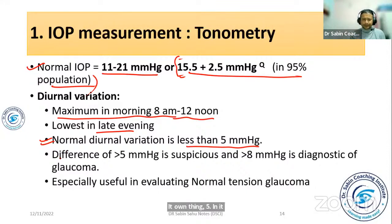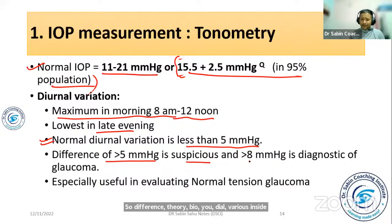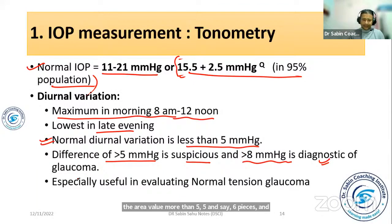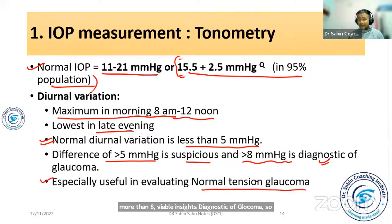If the diurnal variation is more than 5 mmHg, it is considered suspicious. If it is more than 8 mmHg, it is diagnostic of glaucoma. This diurnal variation measurement is especially useful in normal tension glaucoma.